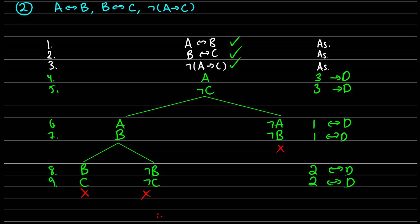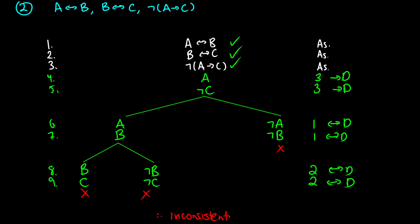Therefore, all the branches on the tree have closed. This is a closed tree, so we know this is a set of inconsistent well-formed formulas. This is what our final truth tree looks like for these well-formed formulas. Hopefully you're able to work with these rules now. If you have any questions, feel free to ask in the comments below and I'll try to get back to you as soon as I can.